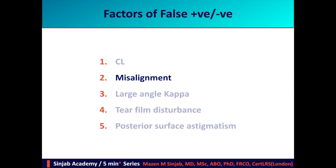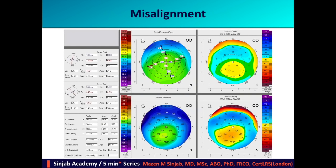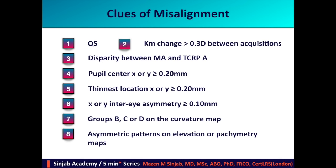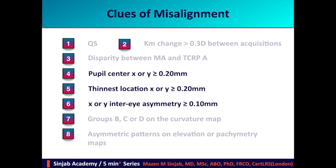Misalignment affects the patterns and numbers on corneal tomography, as in this example. As you see, this patient was looking downward while taking the capture. The curvature map shows asymmetric inferior steep. In addition, there are bulgings on both anterior and posterior elevation maps and a downward displacement of the corneal thickness map pattern. This is the same patient after proper realignment — the abnormalities have disappeared. There are a number of clues of misalignment, but concentrate on three: pupil center coordinates, thinnest location coordinates, and inter-eye asymmetry in terms of coordinates of pupil center and thinnest location.